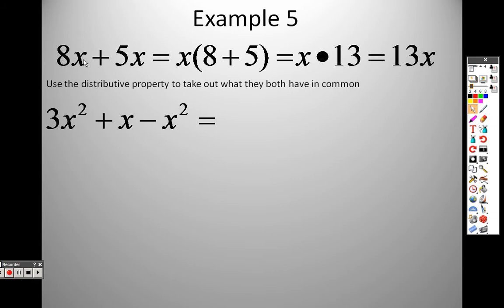Or, you can just look at this very simply and say, if you have 8 x's and you have 5 x's, you have 13 x's. This is simply adding expressions together that are alike, common terms. If you had 8 apples and you had 5 apples, you have 13 apples. So, if you had 8 x's and 5 x's, you would have 13 x's.